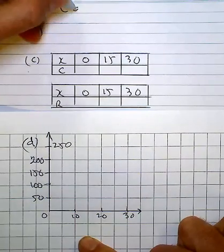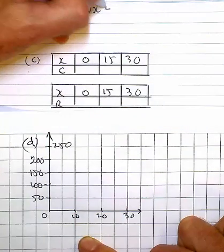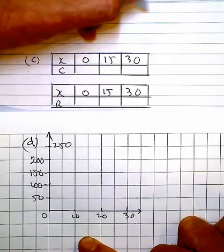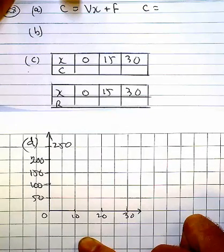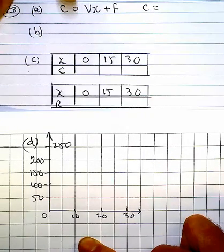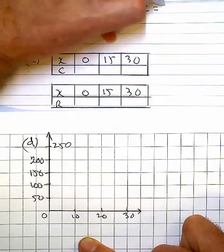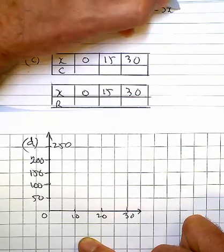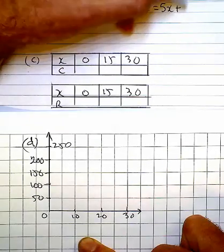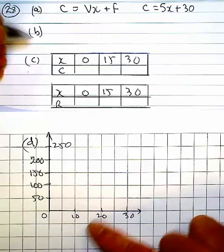The cost function is given as the variable times your units plus your fixed cost. In Susan's case, it's going to cost her $5 to buy each t-shirt, and she's paying $30, so we're looking at a weekly cost function.